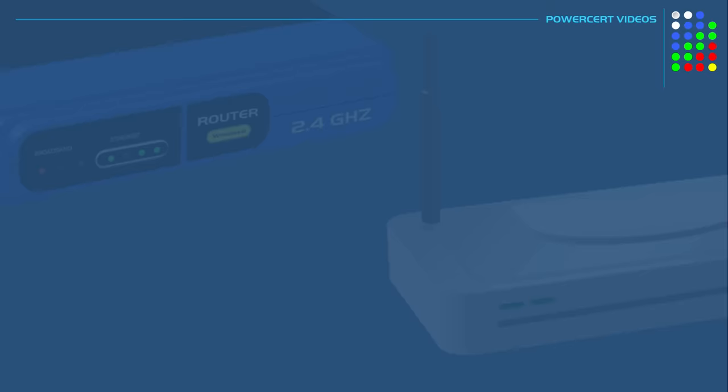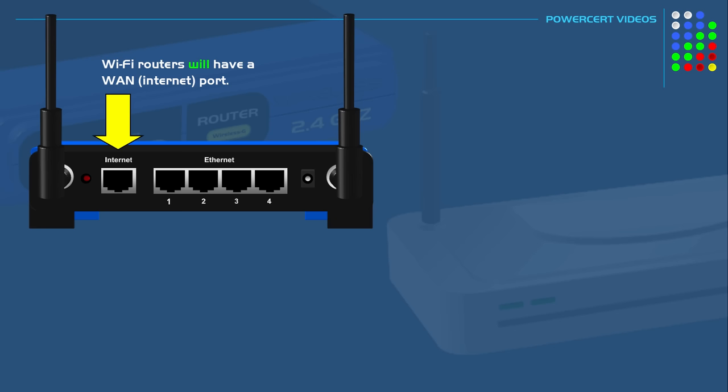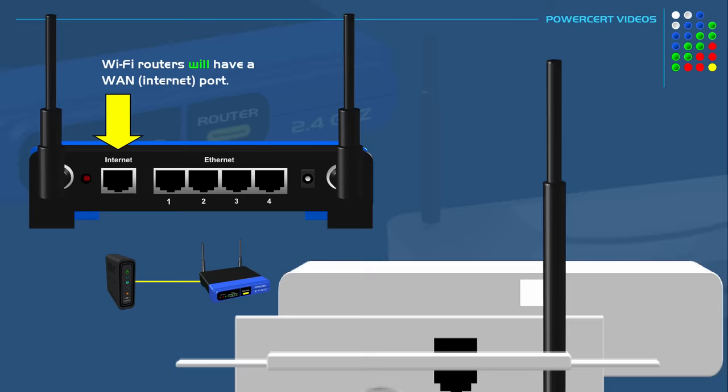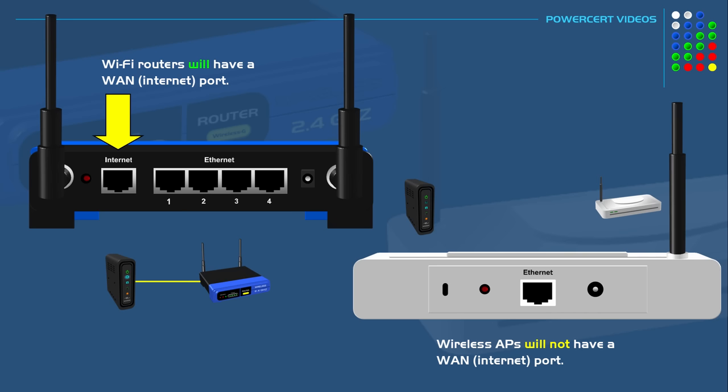Another difference is that wi-fi routers will have a WAN port, or internet port. A WAN or internet port is where you would plug in a network cable coming in from your modem, and this is what gives your wi-fi router an internet connection so it can pass it on to other devices. Whereas a wireless access point doesn't have a WAN or internet port, so it cannot directly connect to a modem. It has to connect directly to a router instead, and then the router is what connects to a modem.